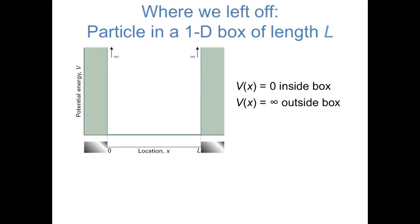First, I'd like to just remind us of where we left off. In the previous video, we defined a particle in a one-dimensional box as a situation in which the potential energy operator is equal to zero inside the box and is equal to infinity outside the box. And without really getting into all of the math, we talked about some of our expectations of how a quantum mechanical object would behave in this sort of environment.